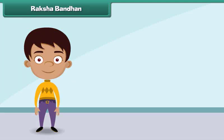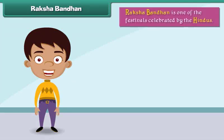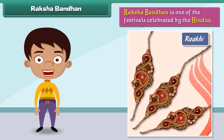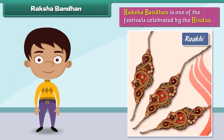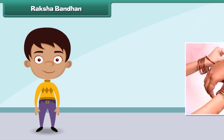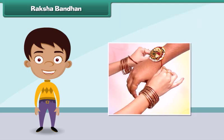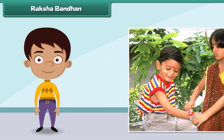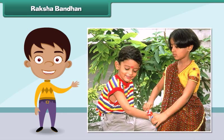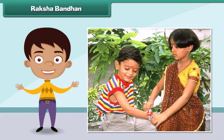Raksha Bandhan is one of the festivals celebrated by the Hindus. On this day, sisters tie rakhis on the wrists of their brothers and pray for their well-being, and in return brothers promise to protect their sisters from all evil.